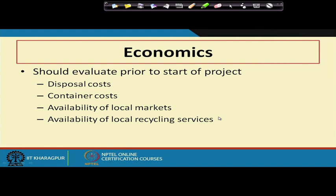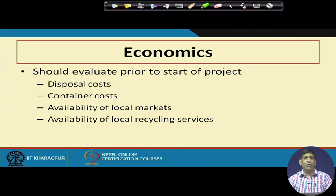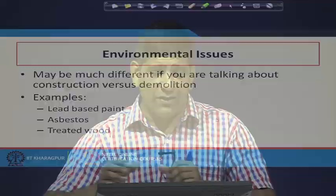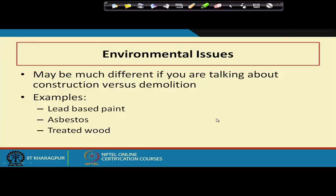Economics should be evaluated prior to the start of a project — looking at disposal cost, container cost, availability of local markets, and availability of local recycling services. If the economics don't work, you won't survive in the business long-term. Inertia — changing the status quo — requires constant education and reinforcement. We also need dedicated oversight. Environmental issues may differ between construction and demolition: demolition waste may contain lead-based paint, asbestos, and treated wood, whereas construction waste will not have all of these.